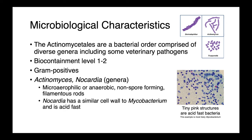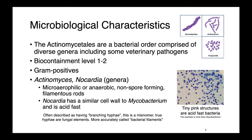Our Actinomyces and Nocardia species are microaerophilic or potentially anaerobic, non-spore-forming filamentous rods. Nocardia are really interesting in that they have a cell wall quite similar to Mycobacterium, which, as we'll learn in a future lecture, is acid-fast and requires special staining to visualize. Both Actinomyces and Nocardia are often described as having branching hyphae, but this is a misnomer because true hyphae are actually fungal elements — these bacteria would more accurately be described as having branching filaments.